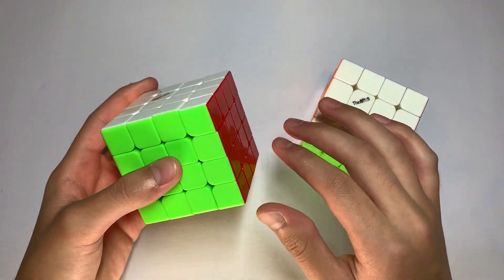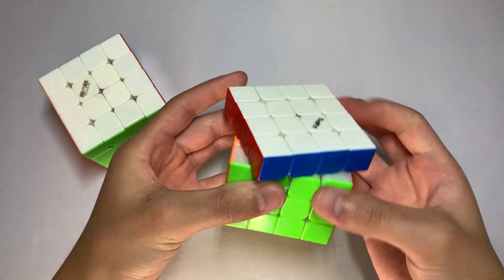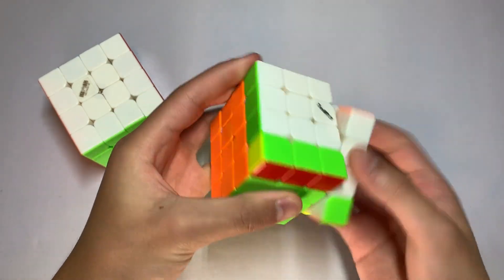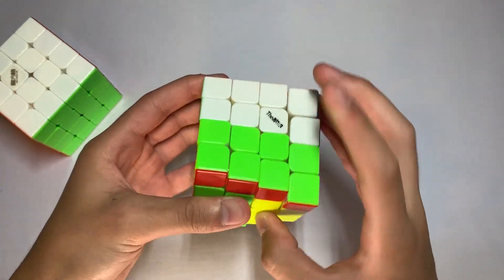Just to compare it to my current main, the Mini Wu Chui M. The Valk 4 seems to have much smoother and controllable turning out of the box, compared to the Mini Wu Chui. I can definitely see this cube becoming my main.